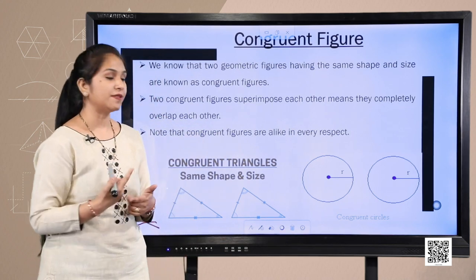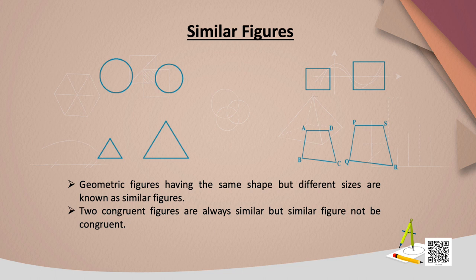Now let's look at more examples shared here. In the first case we have two circles — they are the same shape but different sizes. Next we have two squares — one smaller, one bigger — same shape but different size. Such figures where the shape is the same but the size is different are said to be similar figures.